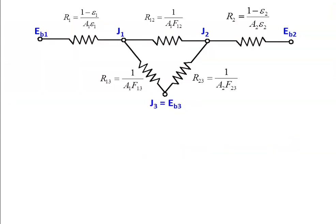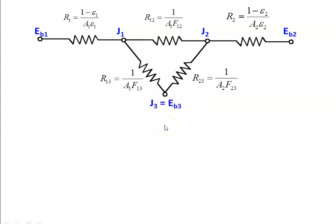This is the network for the arrangement. Eb1 is the emissive power of the first plate, Eb2 is the emissive power of the second plate, and Eb3 equal to J3 is the emissive power of the room, so its surface resistance is neglected since the third surface is re-radiating. The resistance values are surface resistance R1, R2, and shape factor resistances R12, R13, and R23.